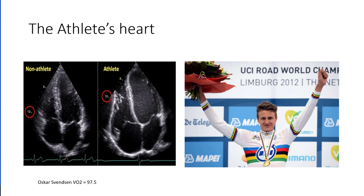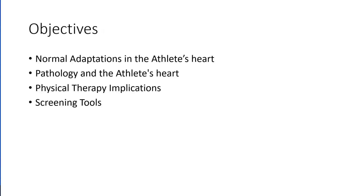Oscar Svensson is an 18-year-old from Lillehammer in Norway who, at the time, had the highest VO2 max ever recorded at 97.5 mils per kg per minute — way above normal averages. His resting heart rate was somewhere in the 30s. This gives an appreciation for the changes we see in an athlete: there will be normal adaptations to the cardiovascular system that are physiological, benign, and actually lead to improved performance.